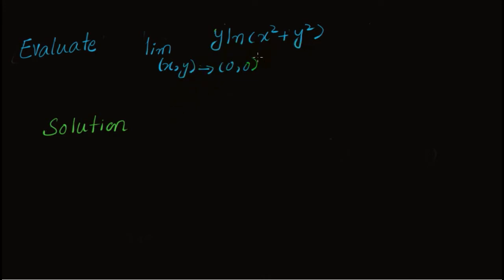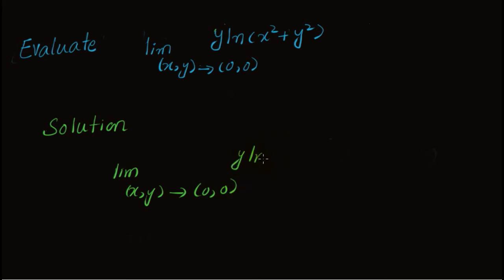In order to evaluate this limit, we first transform this function into polar coordinates and then solve it. Let me rewrite this limit: as (x, y) approaches (0, 0), of y times log of (x squared plus y squared). This is our given function, equation number 1.